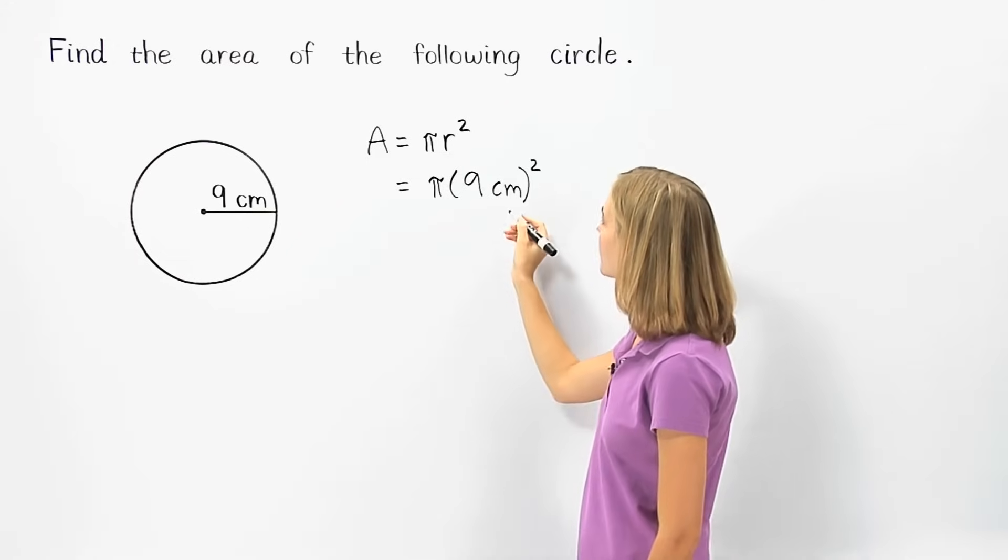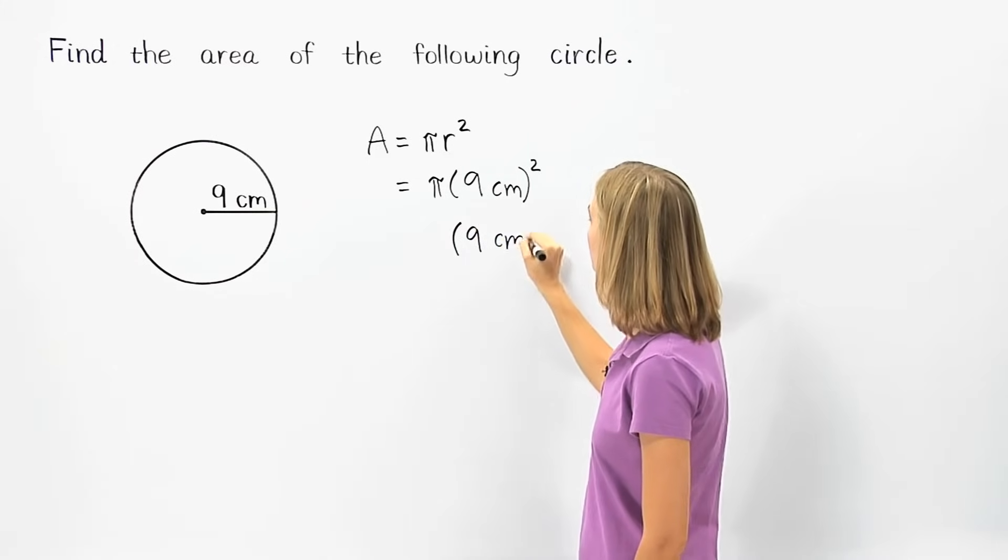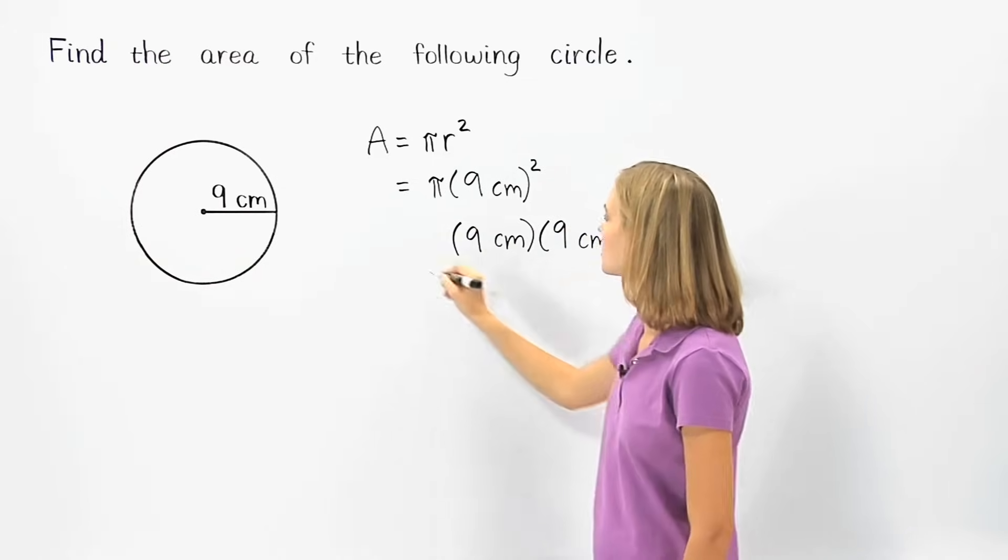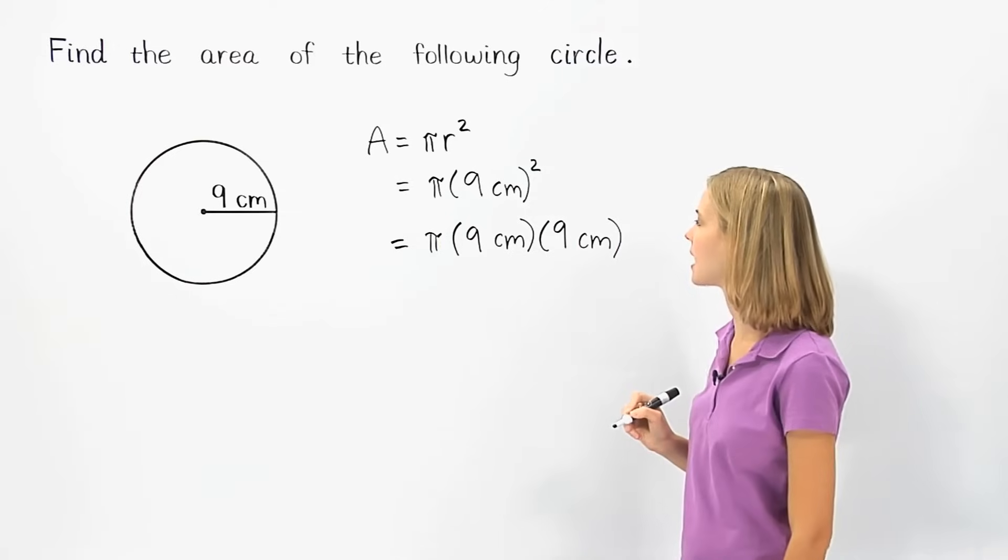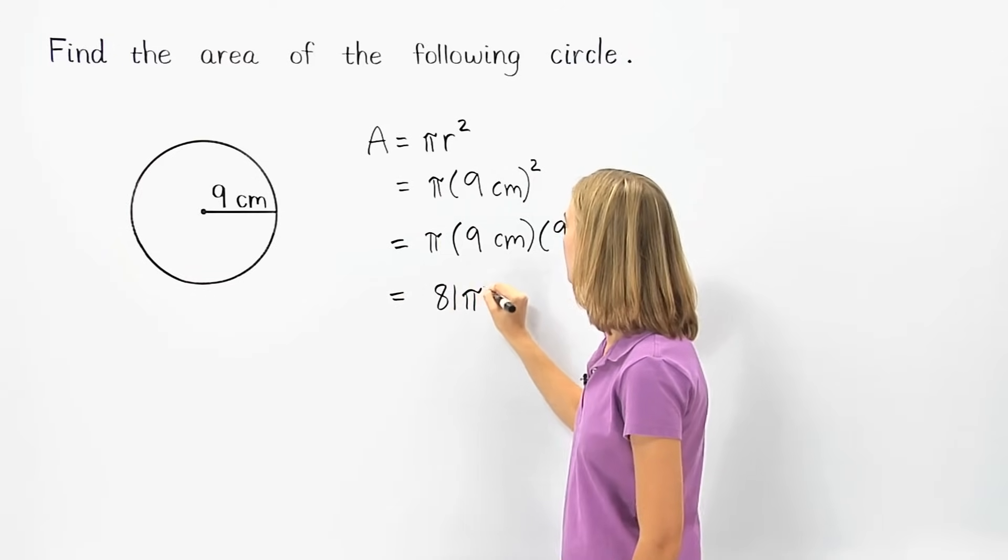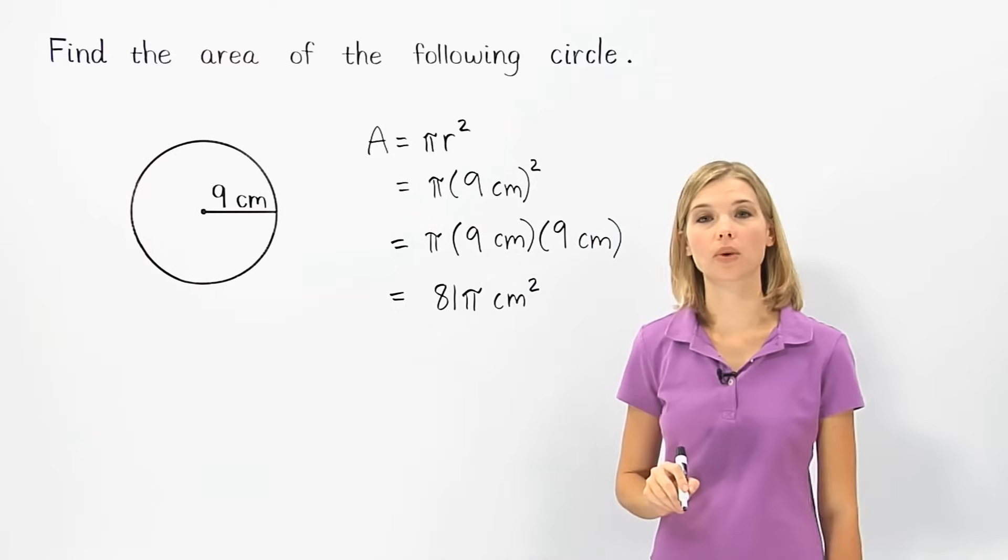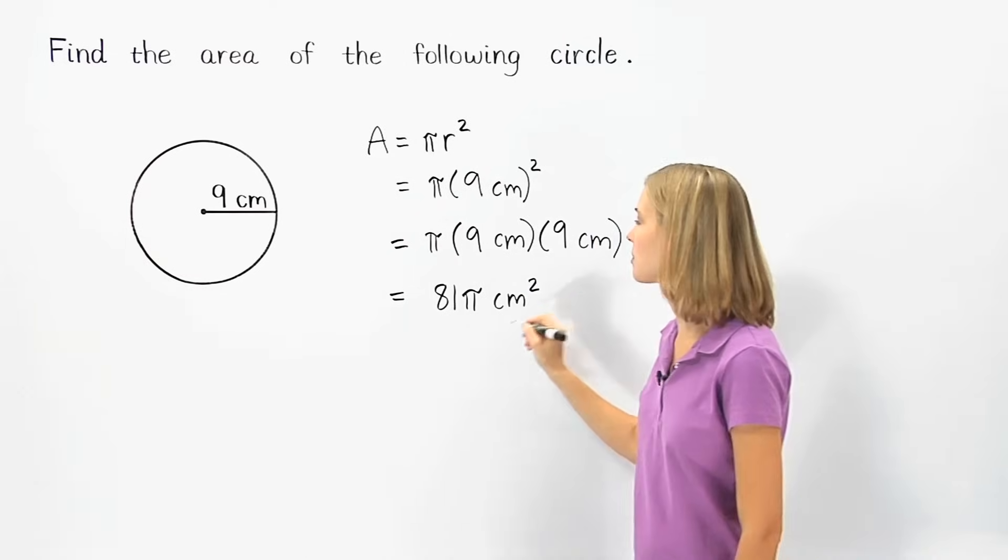Remember that 9 centimeters squared is the same thing as 9 centimeters times 9 centimeters. So we have pi times 9 centimeters times 9 centimeters, which simplifies to 81 pi centimeters squared. So one way to write the area of the circle shown is 81 pi square centimeters.